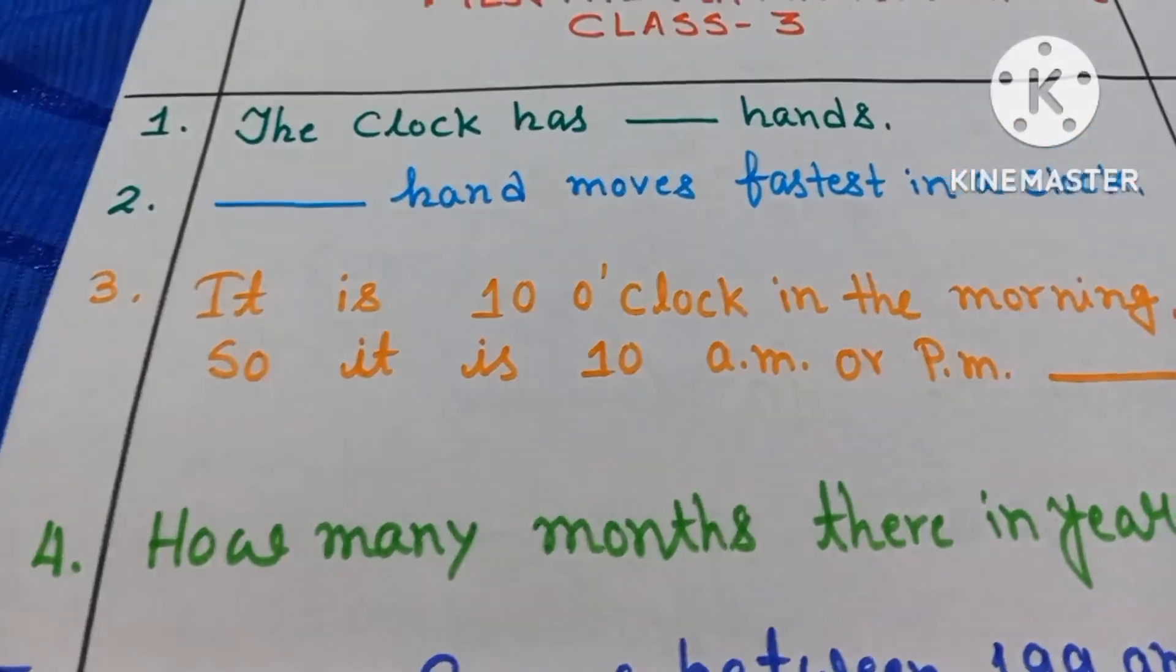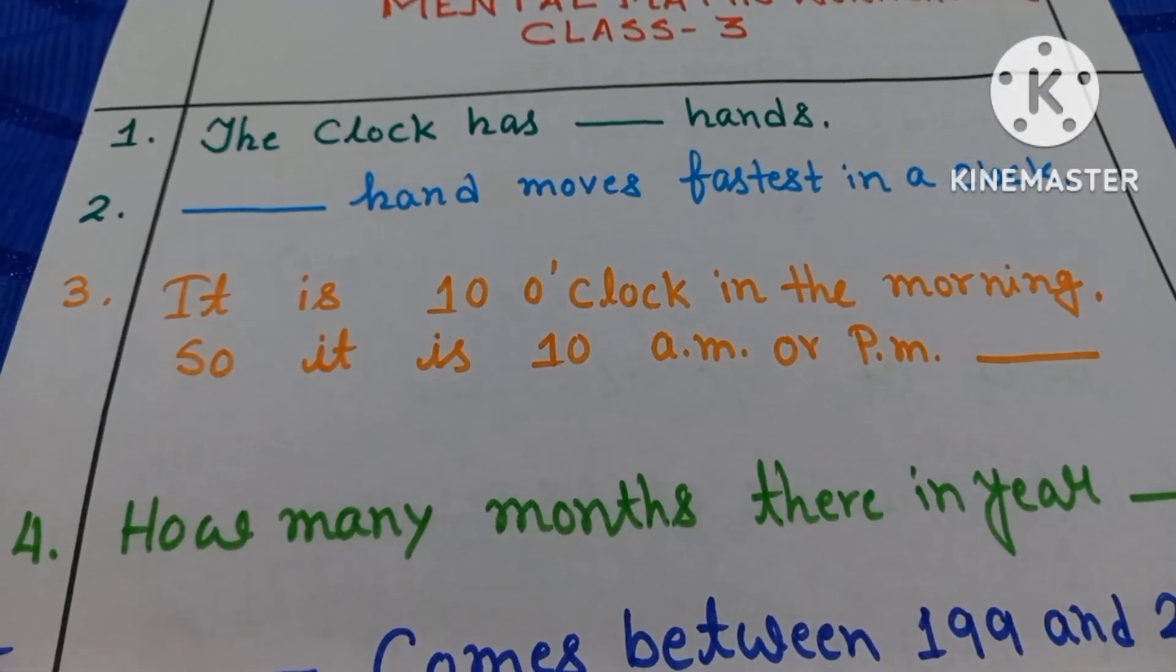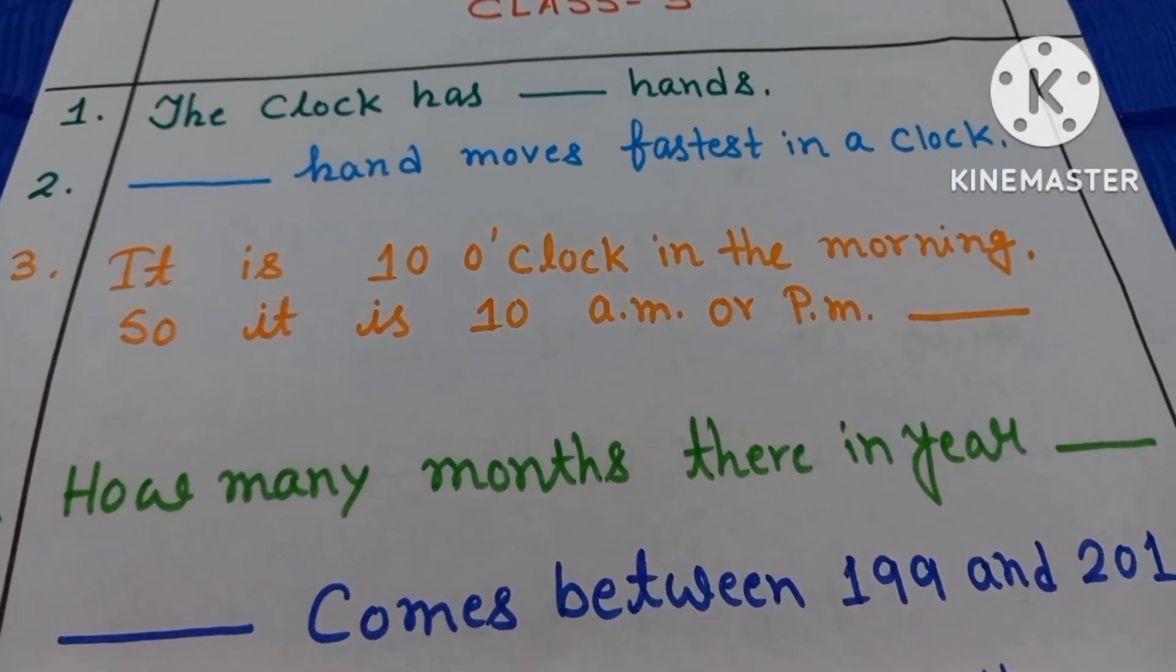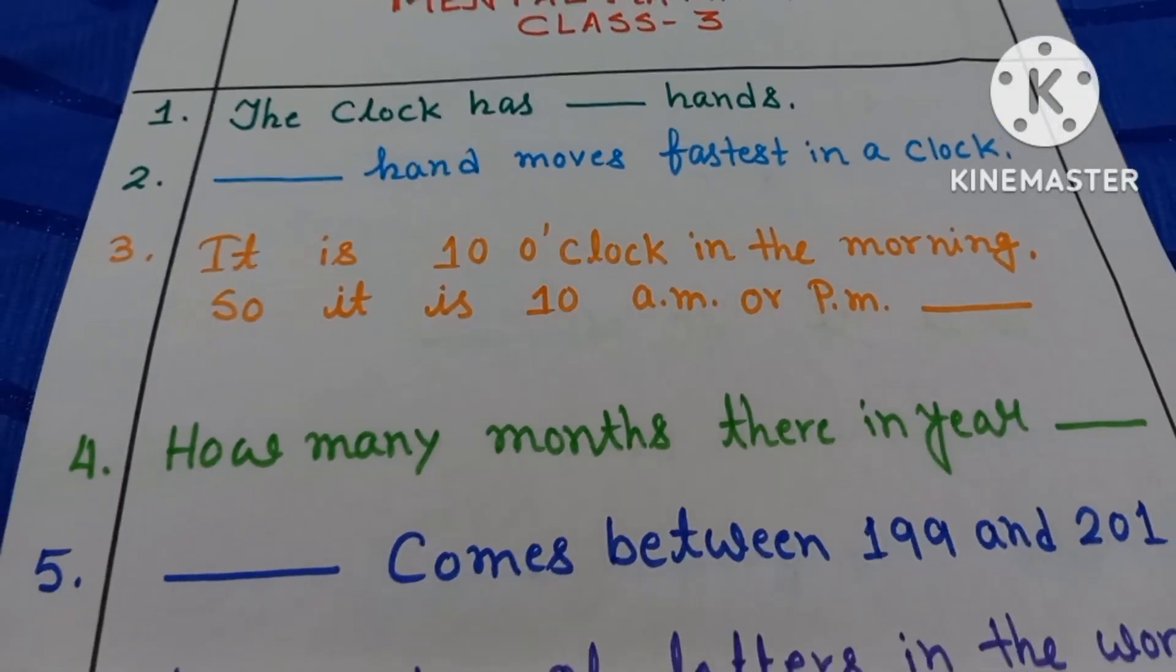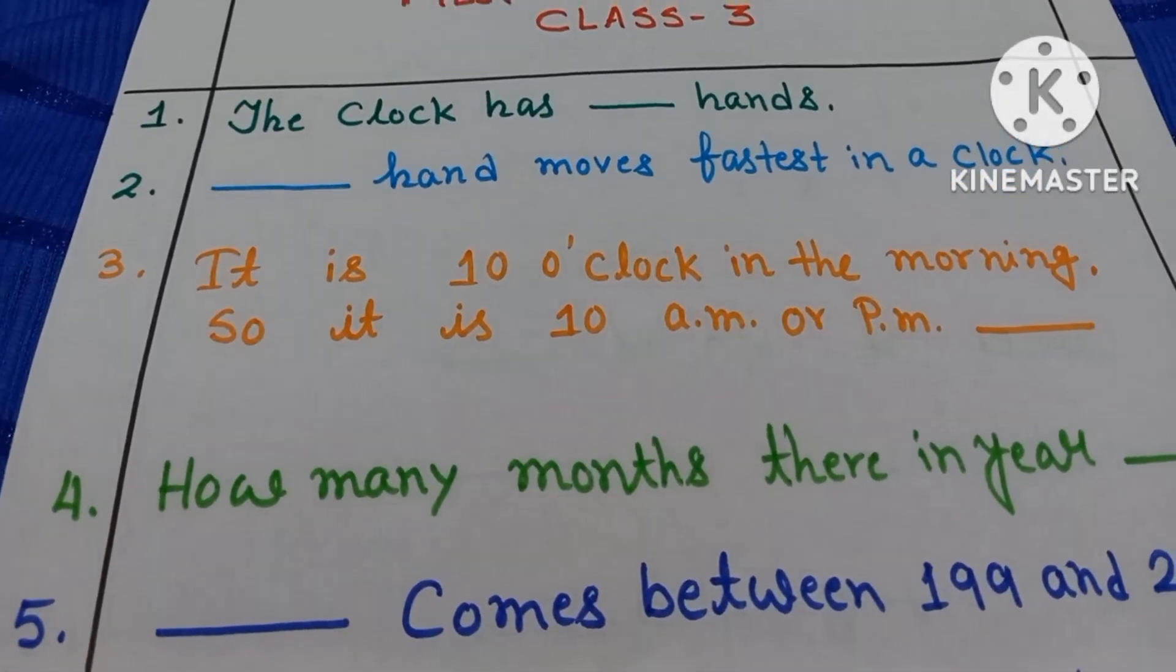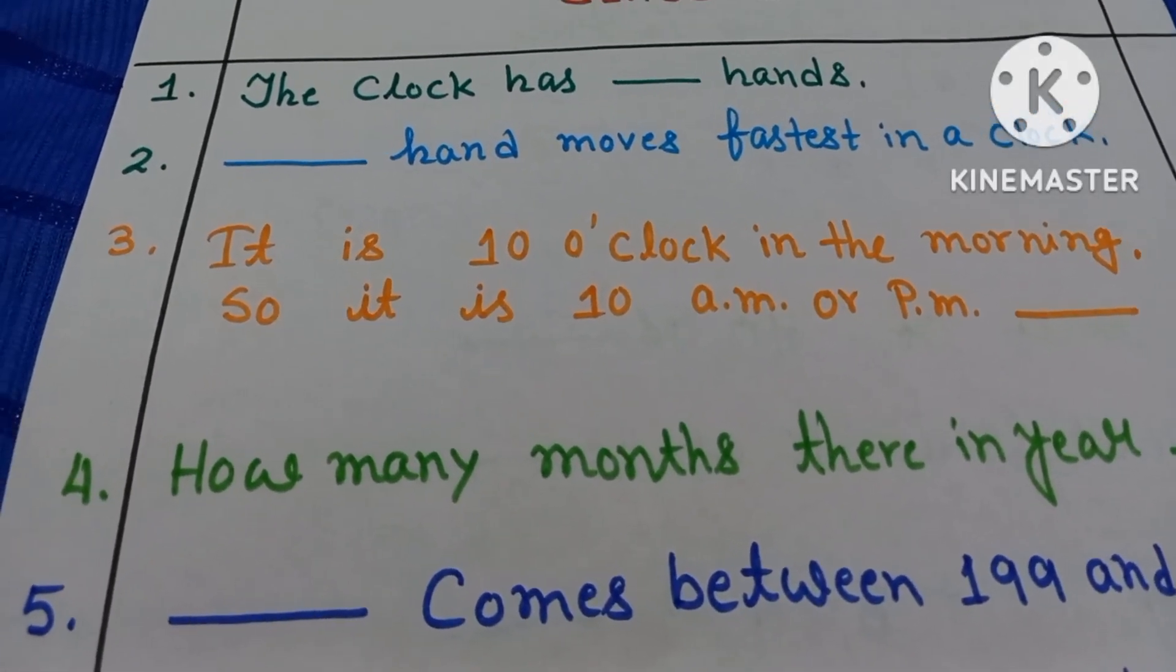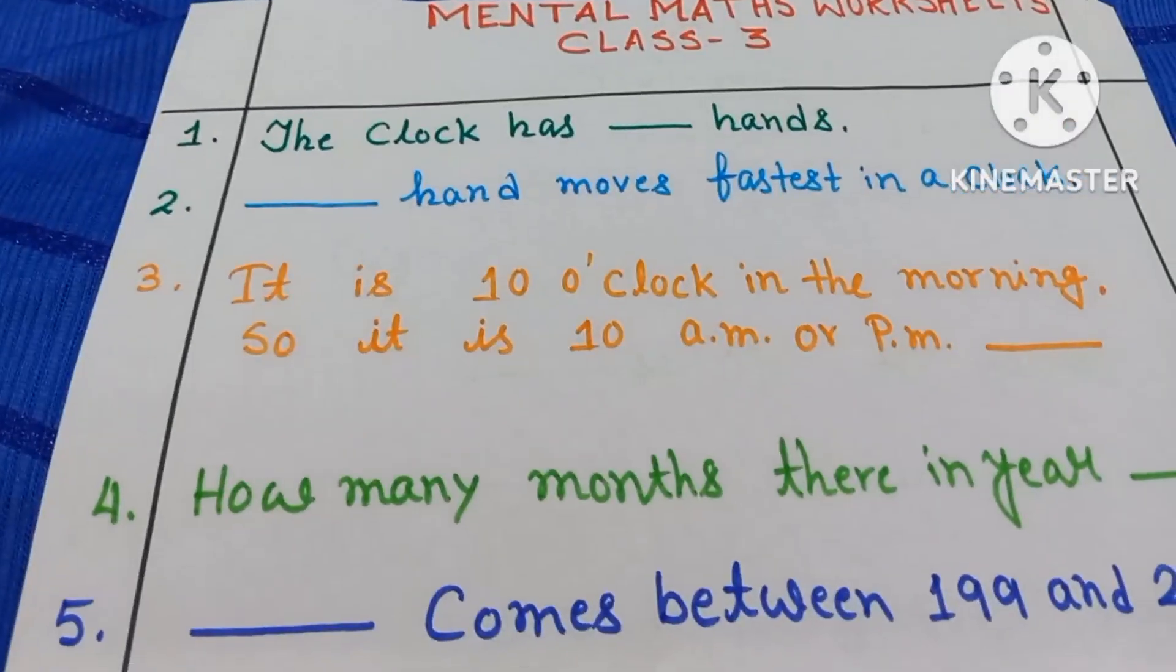Question number 3. It is 10 o'clock in the morning. So it is 10 a.m. or p.m. Please first you have to read the question carefully. It is 10 o'clock in the morning. So it is 10 a.m. or p.m. You know very well.